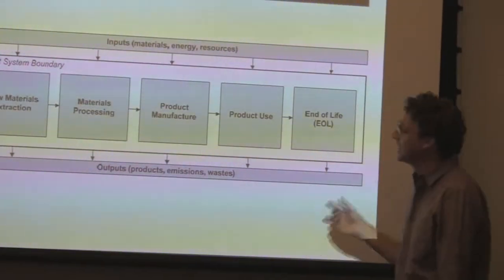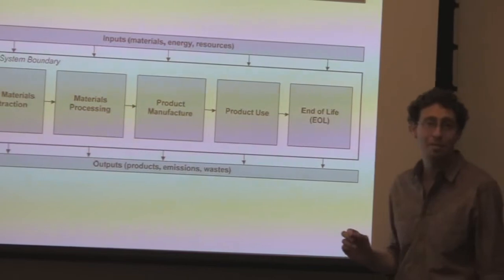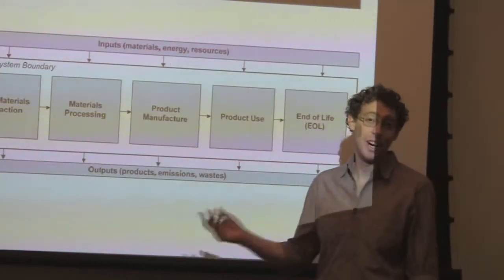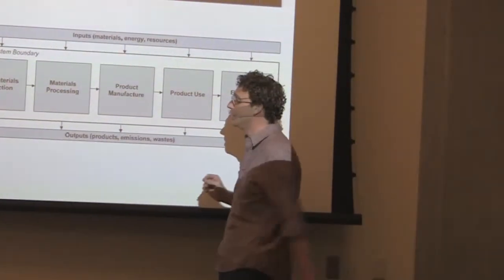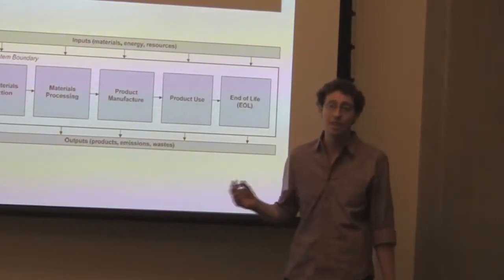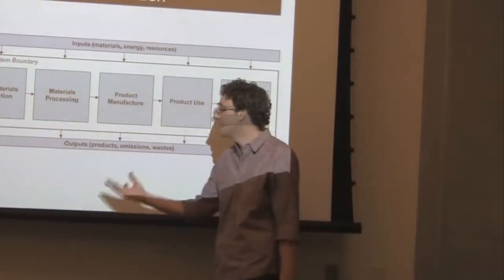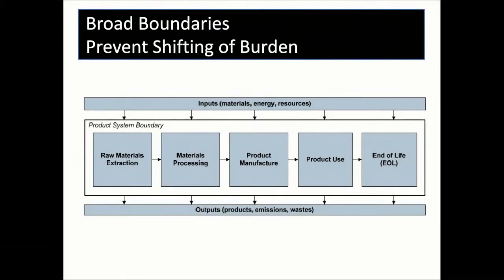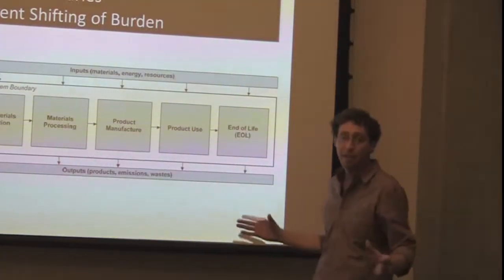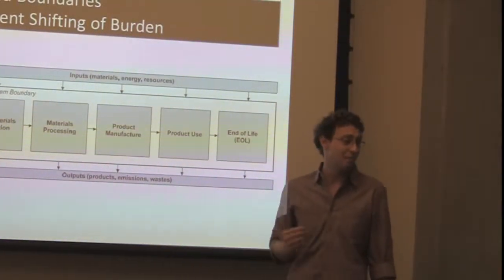It's increasingly realized that this is the correct framework for making environmental decisions and environmental assessment of technologies, because the broad boundaries prevent shifting of burden from one life cycle phase to another. You have to consider environmental impacts from all activities related to a product or technology, from mining and extraction of materials to beneficiation, manufacturing, use, and ultimately end of life. These broad boundaries prevent shifting of burden.